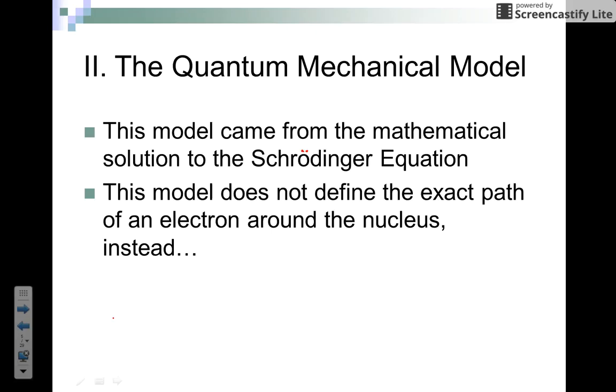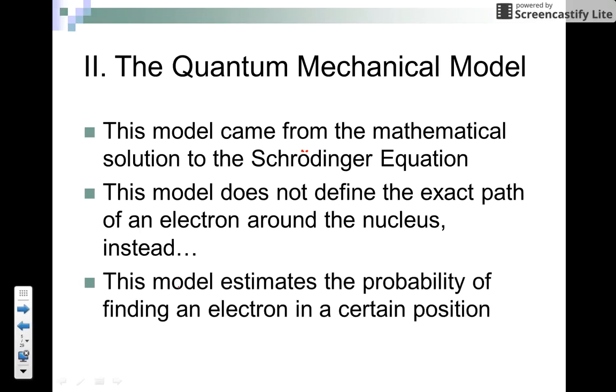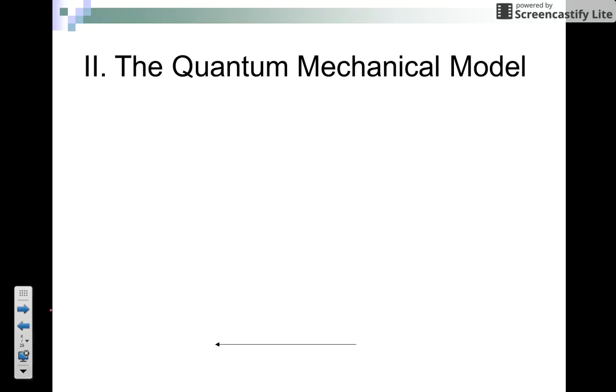We're not going to solve the Schrodinger equation, but we will learn about the quantum numbers in our next lesson. What's unique about this model is it does not define the exact path of the electron around the nucleus. Instead, it estimates the probability of finding an electron somewhere in a certain position within the electron cloud.